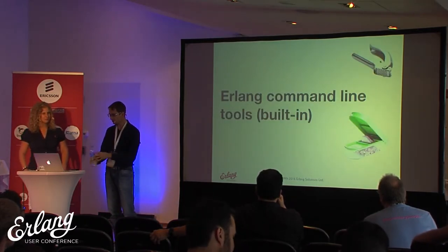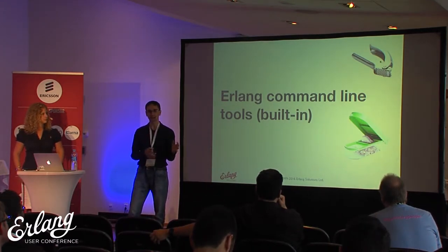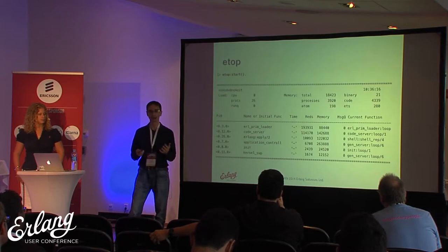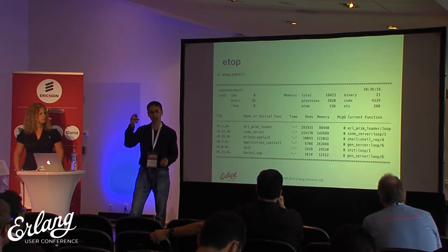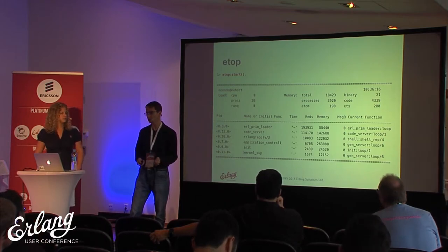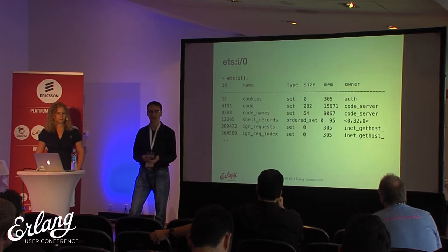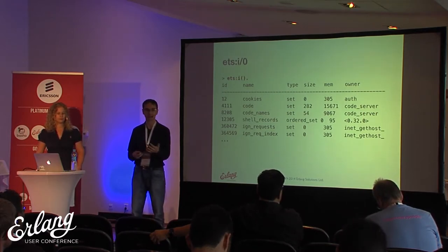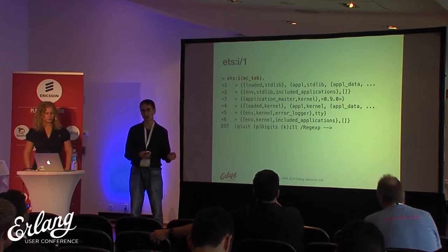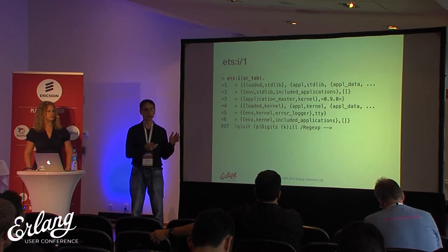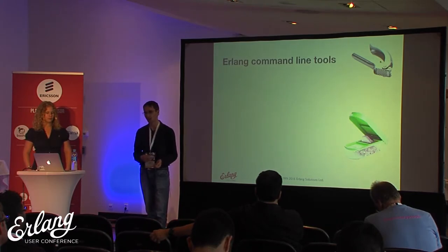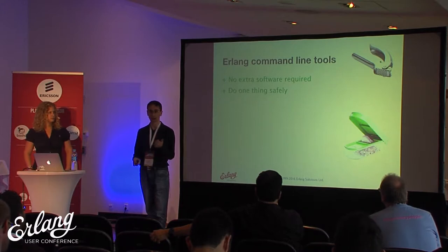There are other tools you can use. On the other end of the scale, there are tools which are good at doing one thing and do that one thing safely. For example, ETOP: if you get into an Erlang node, you can ask ETOP to list the top Erlang processes by some criterion, such as message queue length, and you will get this information in a safe way. Another example is the ETS info function, which tells you what ETS tables you have on your node and what are the attributes of these tables. You can even pass the name of a table and get the contents in chunks so that the system is not overloaded.